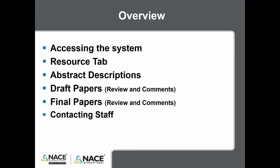This brief tutorial will demonstrate how to access the paper trail system within the NACE website. We will show you how to access the resource tab in paper trail, which contains many helpful documents to assist you in the review process. We will show you where to access abstract descriptions, and how to access the draft papers and final papers. You will be able to enter comments for authors and understand what you need to look for in their paper.